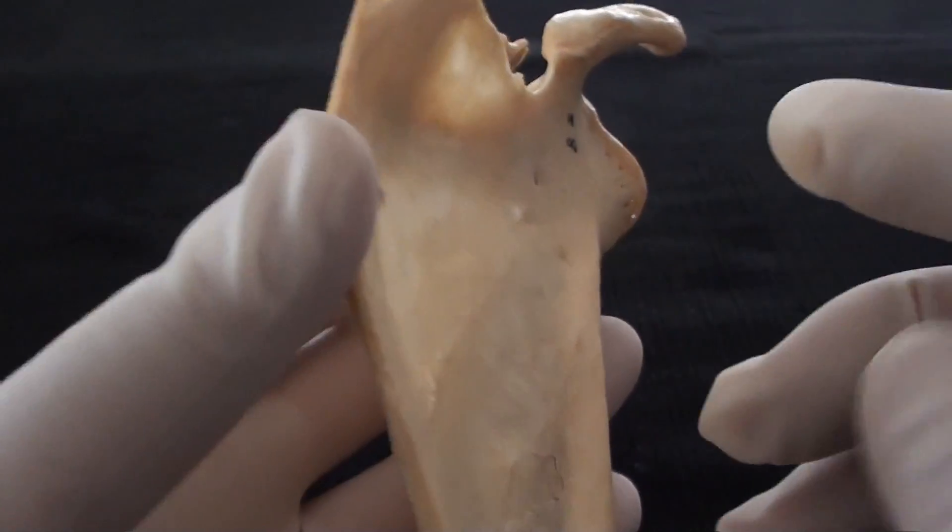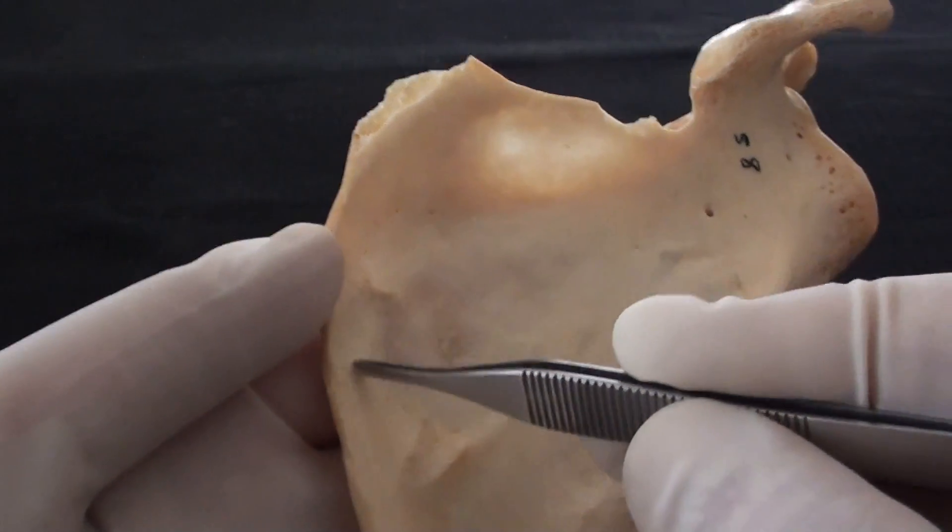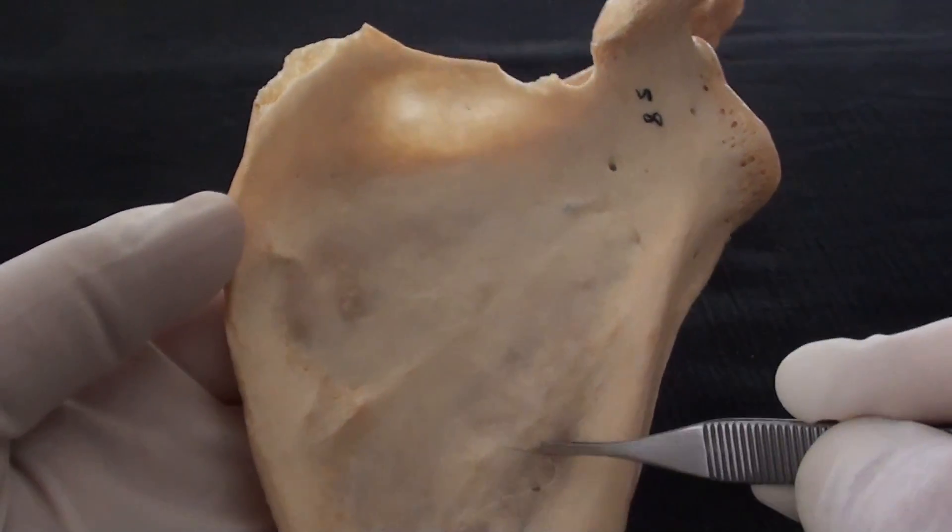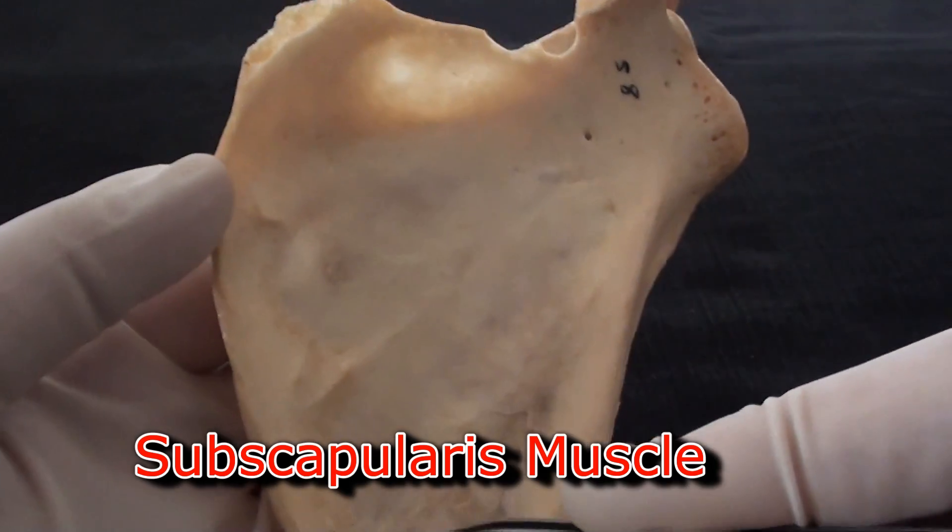On the costal side or anterior side the scapula and its blade is slightly concave so this area will become attachment of subscapularis muscle.